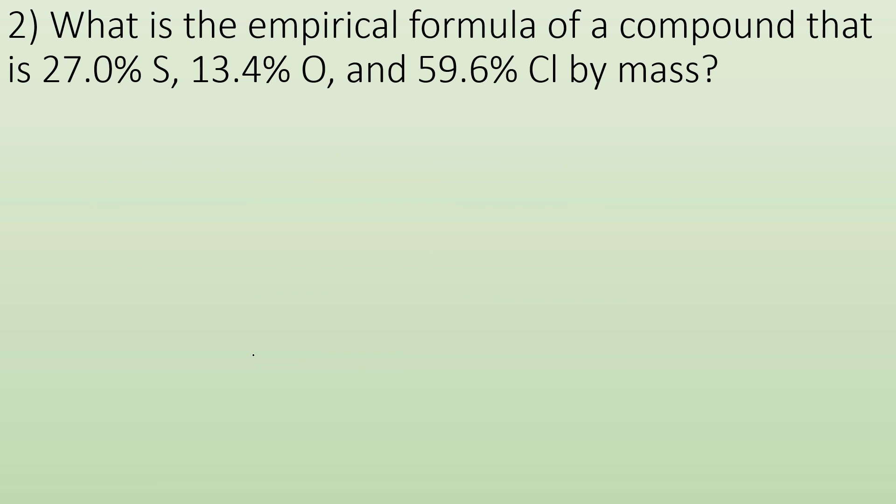What is the empirical formula of a compound that has all of those percentages for those things, right? So let's break it down. I got sulfur, I got oxygen, I got chlorine. I'm going to assume I have 100 grams. So I can say I have 27.0 grams of sulfur, I have 13.4 grams of oxygen, and I have 59.6 grams of chlorine.